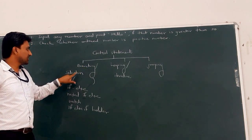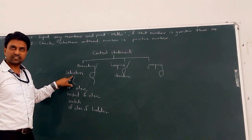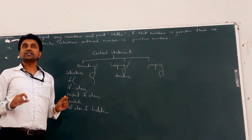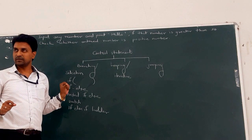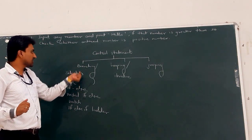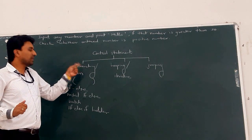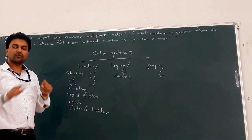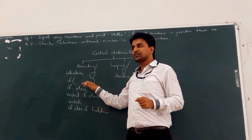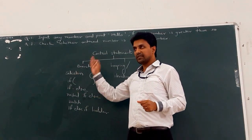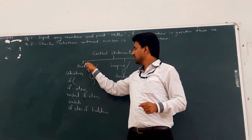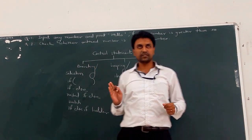All these types are called branching statements or selection statements because based on the condition, we select the statement. If the condition is false, we cannot select that statement. These statements are called selection or branching statements — either one body is executed or the other body is executed, which depends on the condition of that branching or selection statement.